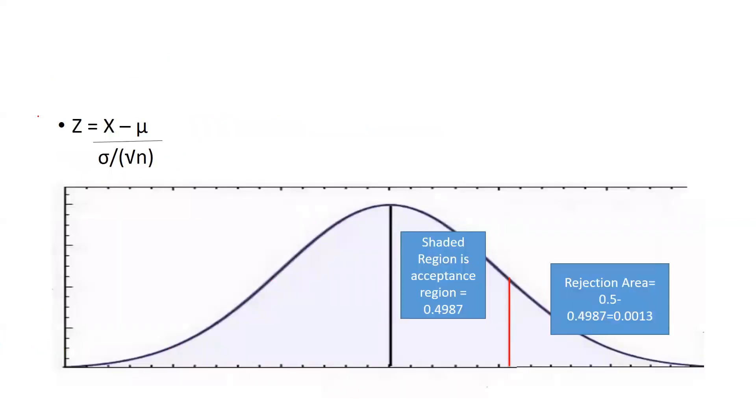Then we are going to apply this particular formula: Z equals x̄ minus μ divided by σ divided by under root n. This is our formula of z. This is our, we can see here we are talking about only this part right towards the one side.